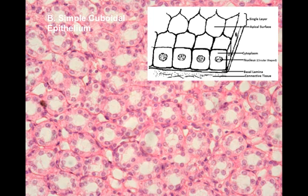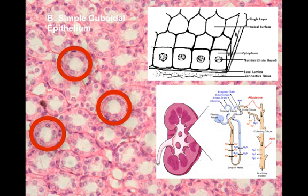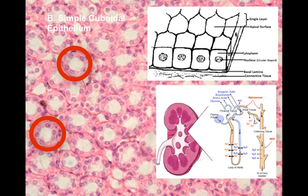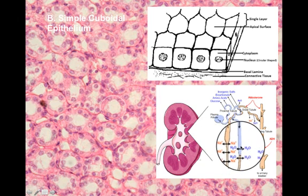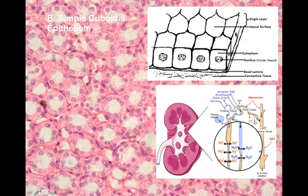Next is simple cuboidal epithelium — a single layer of cuboidal-shaped cells. In the diagram you see a circle showing the cut ends of tubes in the kidneys. The kidneys are loaded with tubes, and each is lined with simple cuboidal epithelium. The dark purple spots in the micrograph are the nuclei, with lighter pinkish color as the rest of the cell. If you draw in the cell boundaries you can confirm each tube is lined with simple cuboidal epithelium. A separate diagram shows what these tubes look like longitudinally.